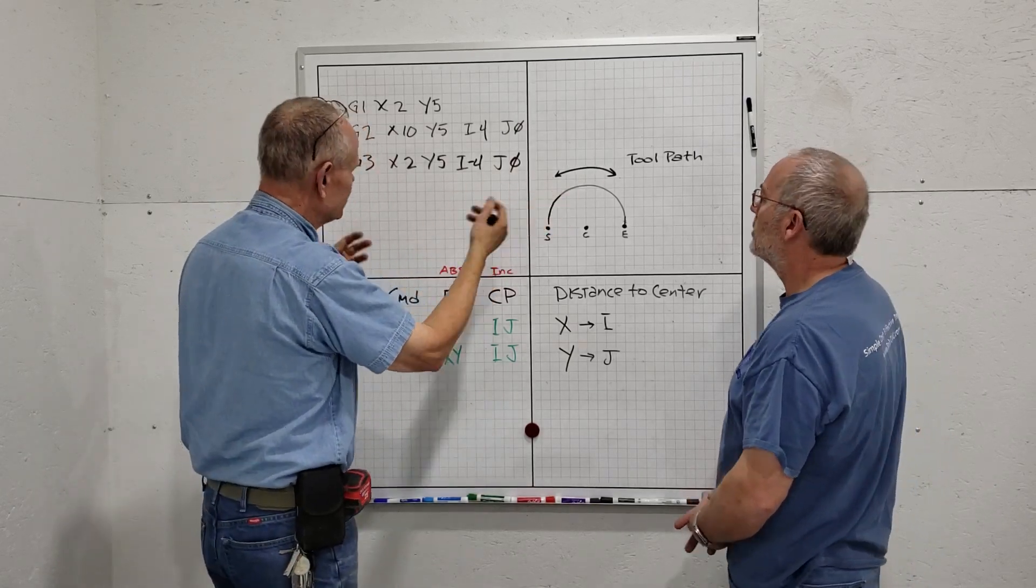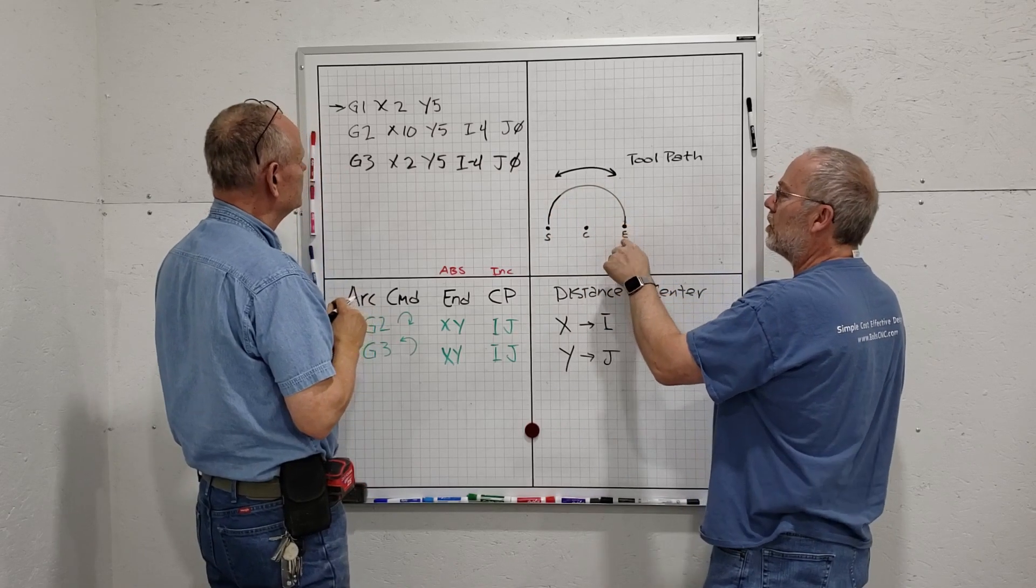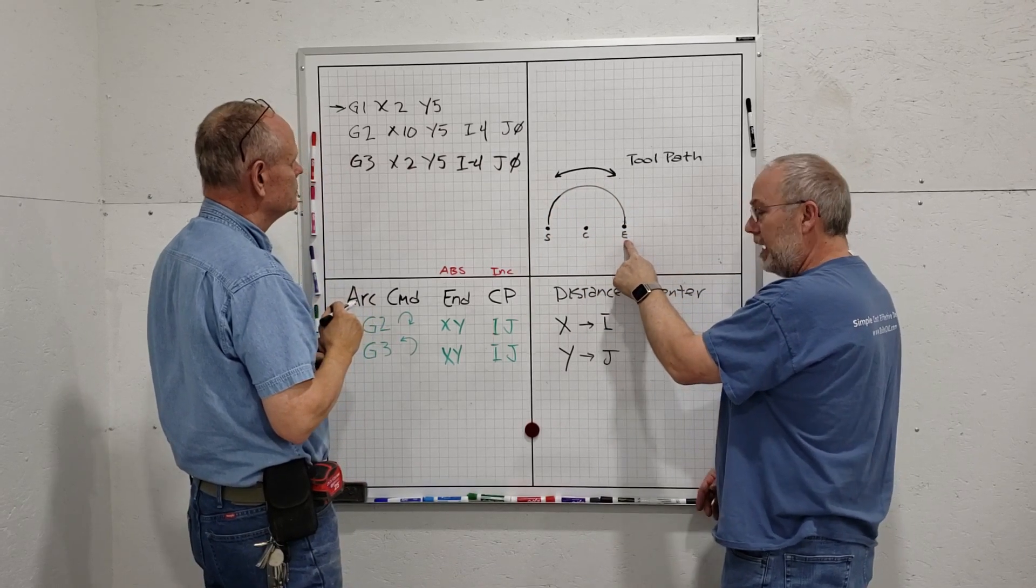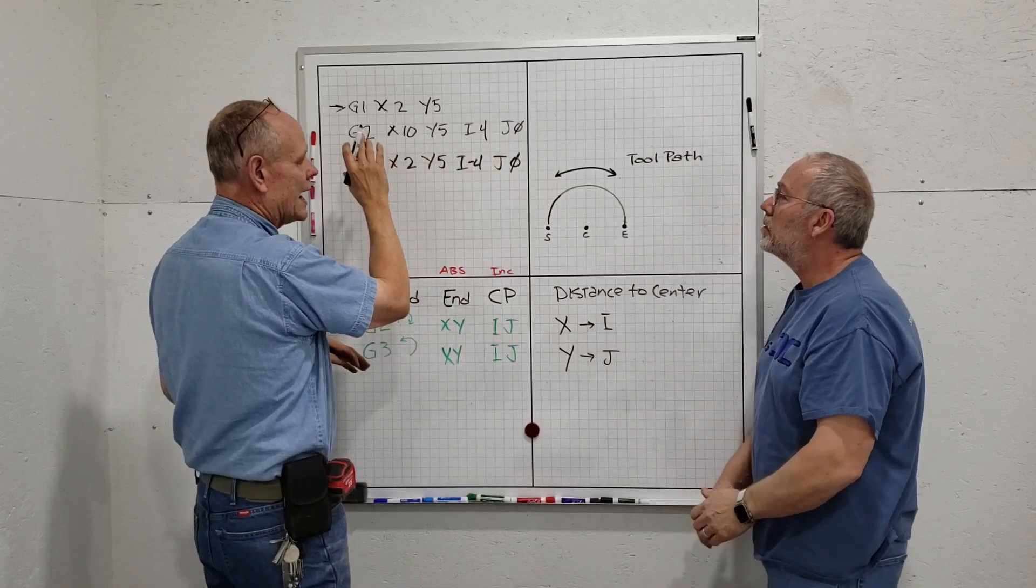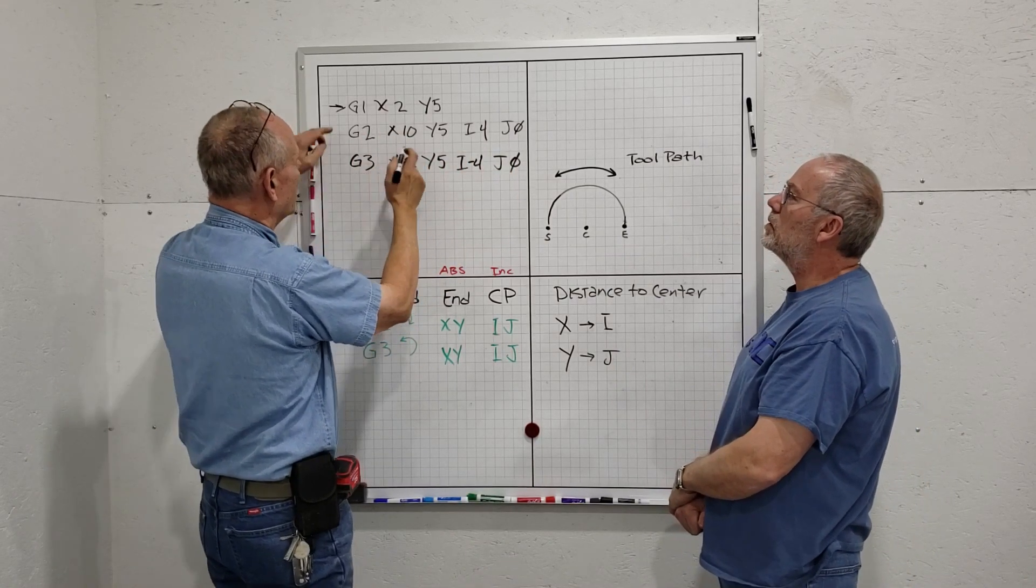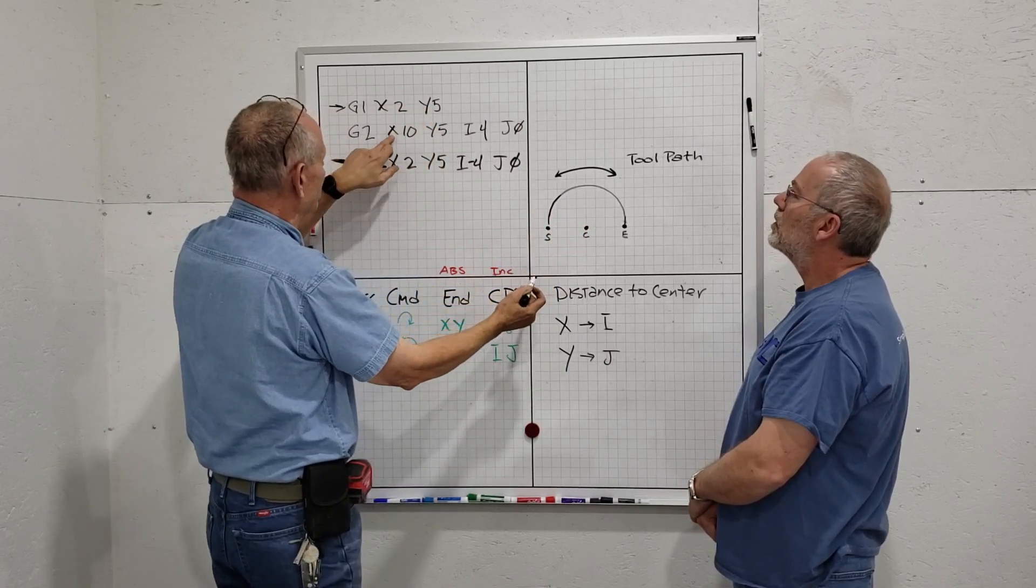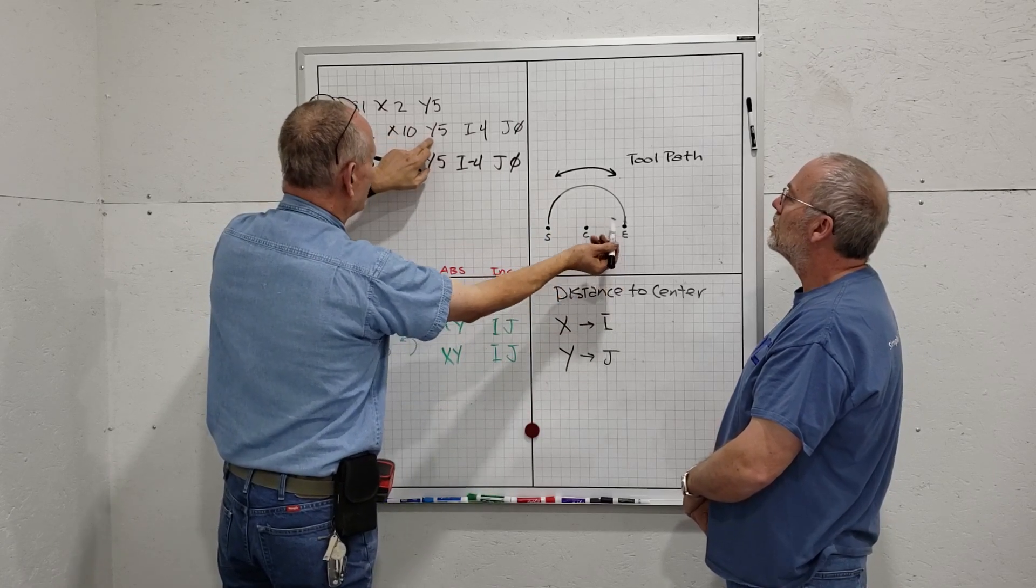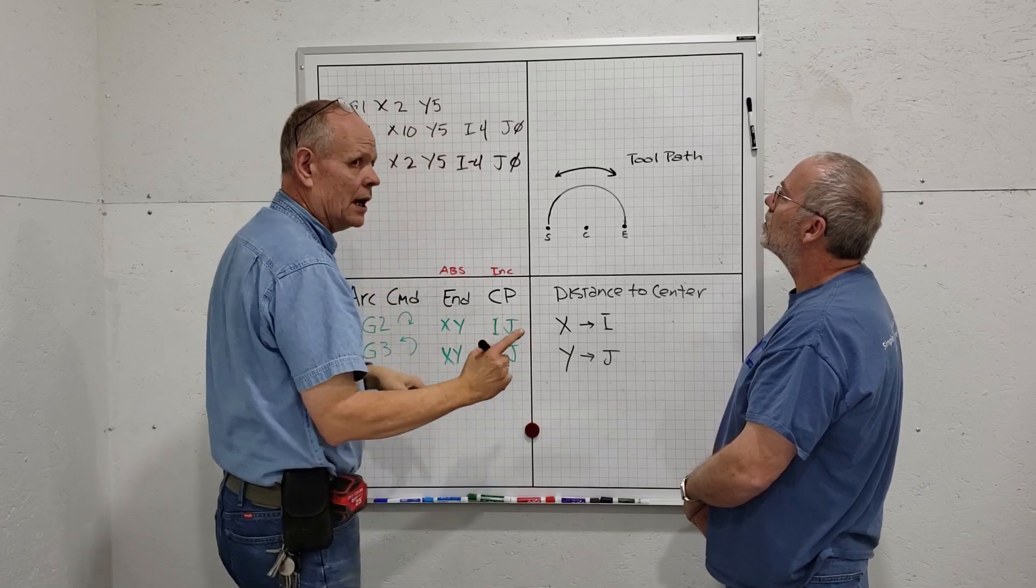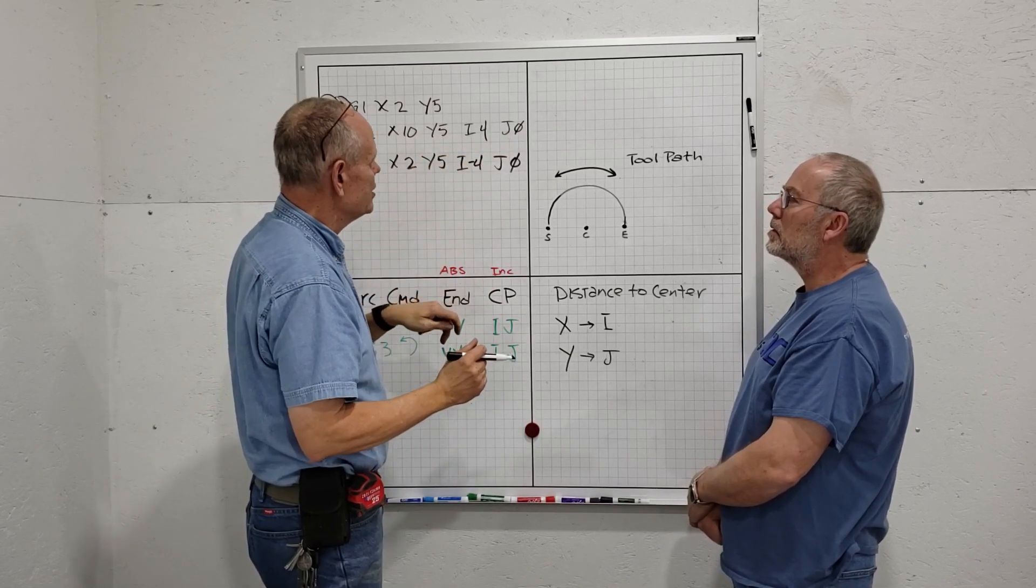We're going to start here where the S is for start, and travel to the E for end. Again, with all G-code commands, we're not telling the machine where we are—we've already done that. We're telling the machine where we're going to end up, which is X10 on the X-axis, Y5 on the Y-axis. Now we have to include the I and J location.